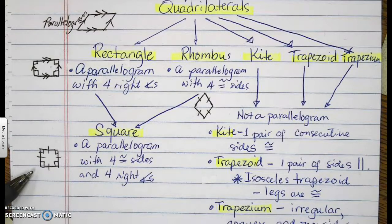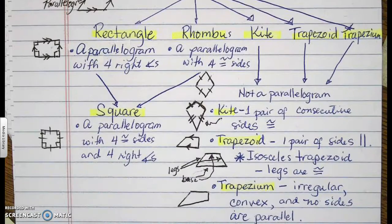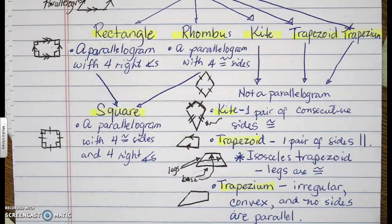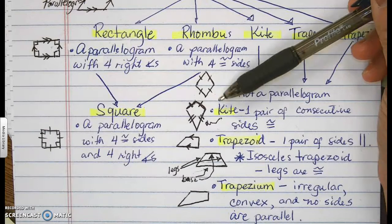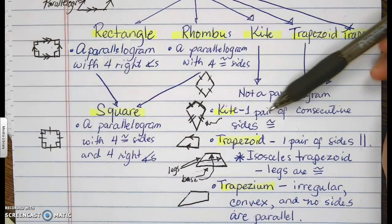So a square will be looking like this. So I have the following illustrations here. A kite would look like this. And based on the definition, it has one pair of consecutive sides congruent.